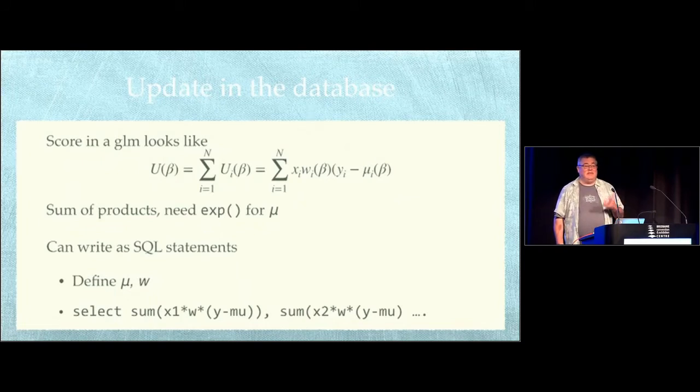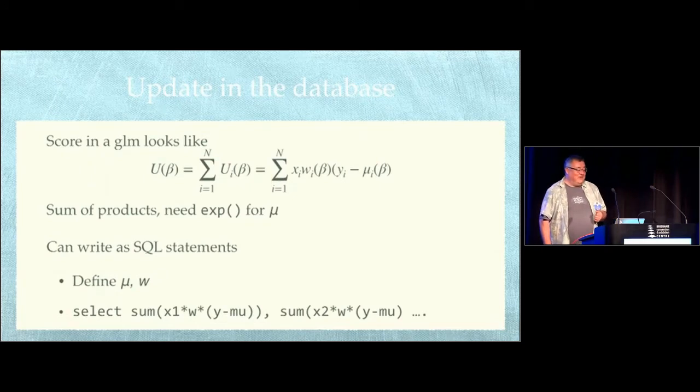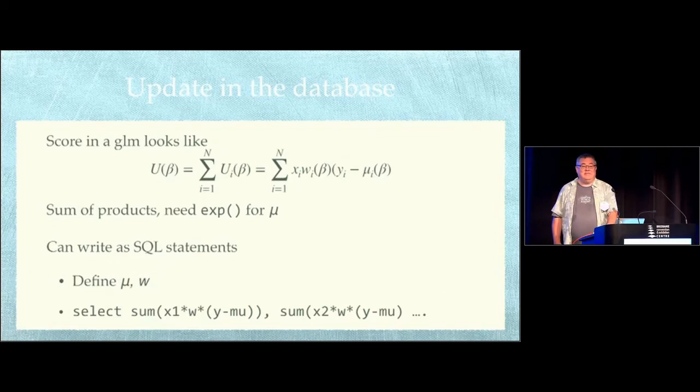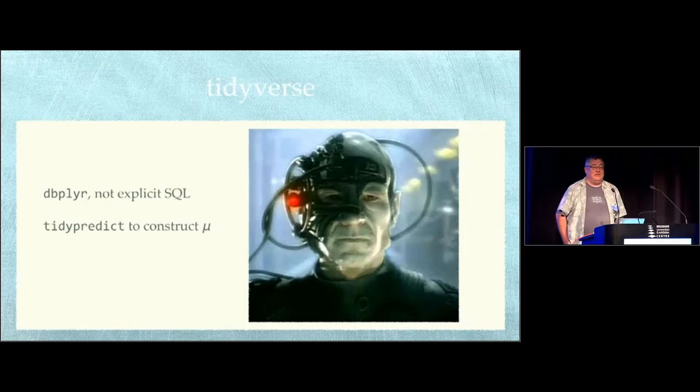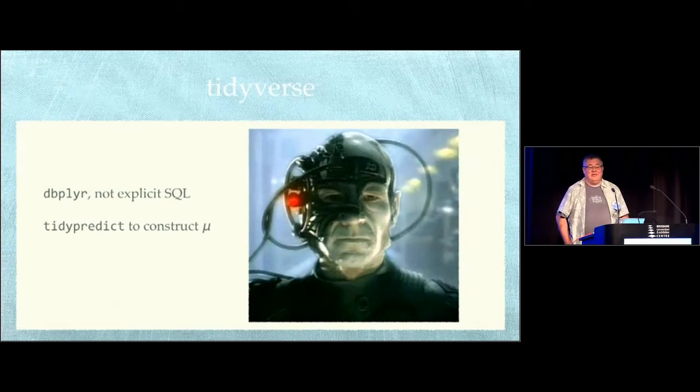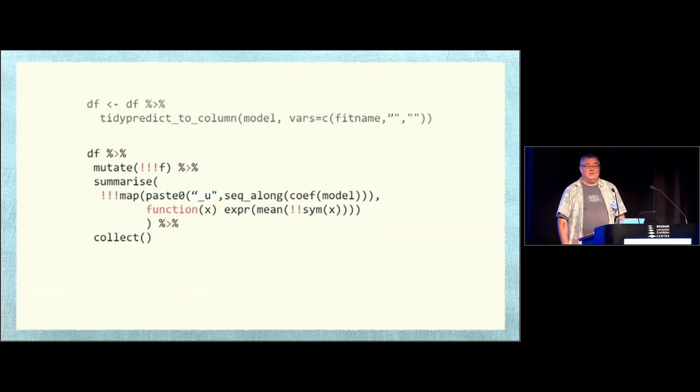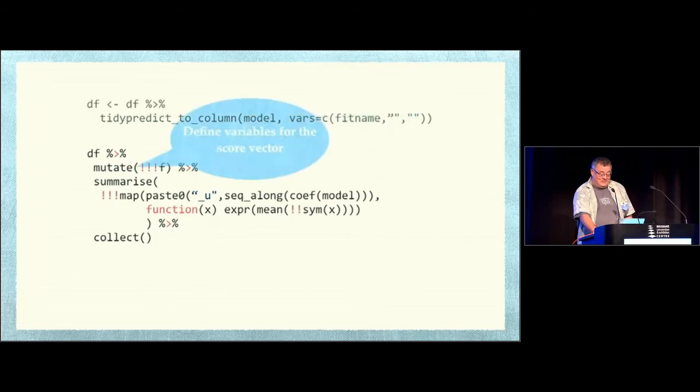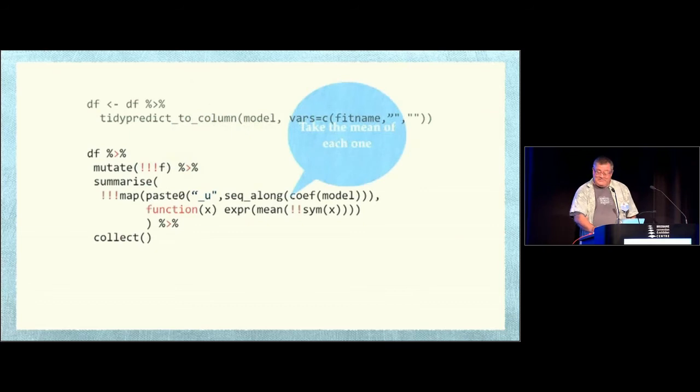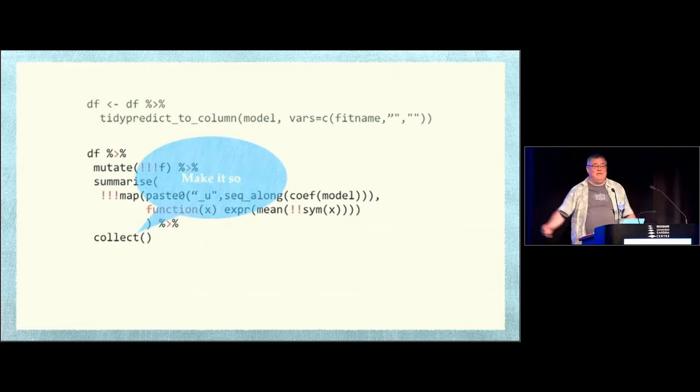You've still got the problem that databases, standards are wonderful, so every database has one of their own. And so it would be nice to have some way to paper over that. And so I'm going to be using dbplyr rather than explicit SQL and the new tidy predict package to construct the fitted means. Unfortunately, this means that you have code that looks like that in your package. The tidyverse is very nice from the point of view of the user, slightly less nice from the point of view of the implementer. So we've got tidy predict to compute the fitted values, define the variables for the score vector, take the mean of each one, and then actually do it. All the previous steps of building up a great big huge SQL statement that you finally send off for computation.